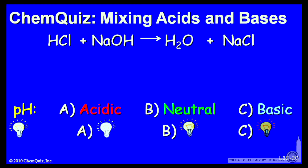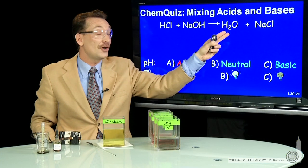And that's true. When you mix a strong acid and a strong base, you make water and a salt. And in this case, the salt is sodium chloride. The sodium ion is coming from the base. The chloride ion is coming from the acid.